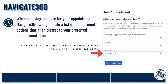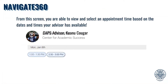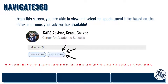Before selecting Find an Available Time, make sure you've updated the date or range of when you'd like to meet with your advisor. The system will automatically populate availability based on times that most closely align with your request. From the next screen, you'll be able to view advisors who are able to work with you. Choose a time and day that works best for you.